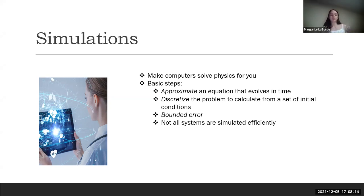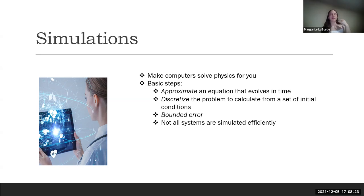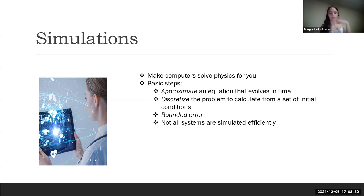That's important because it really determines what systems are efficiently simulatable versus ones that are not. In principle, you could try to put any algorithm onto a classical computer — that's what the Church-Turing thesis tells us — but in actuality that's not always efficient for any given system or any given error. So that's the limiting factor.